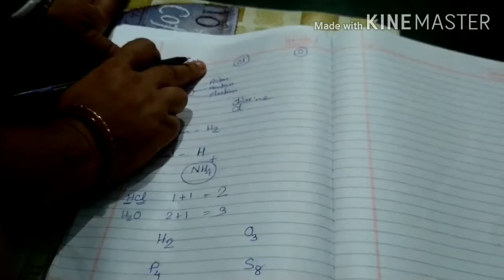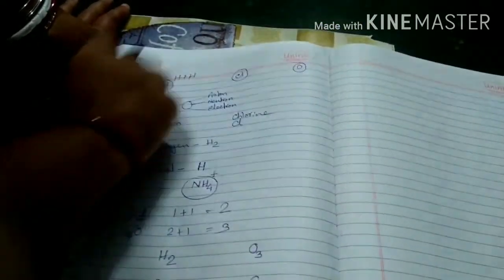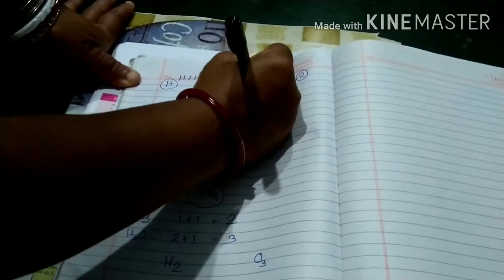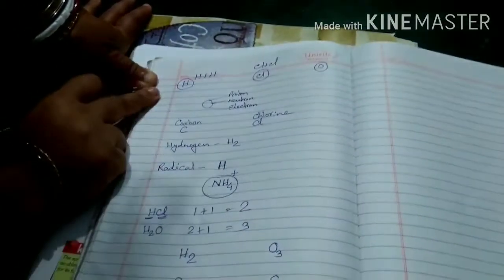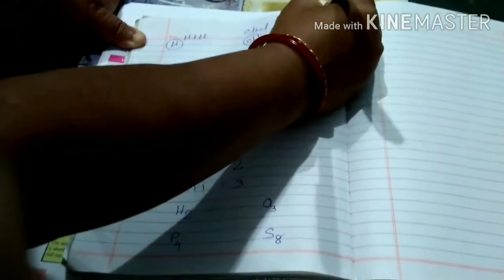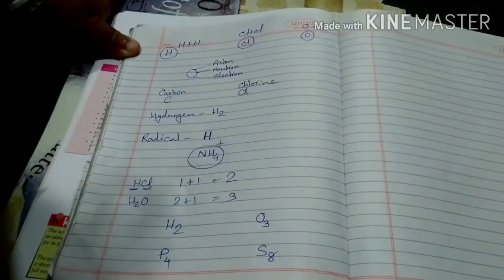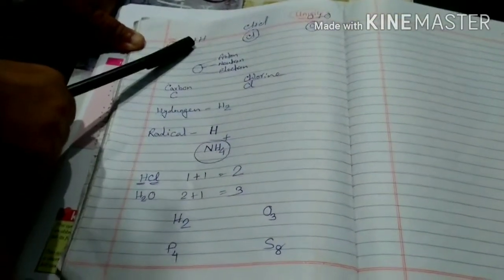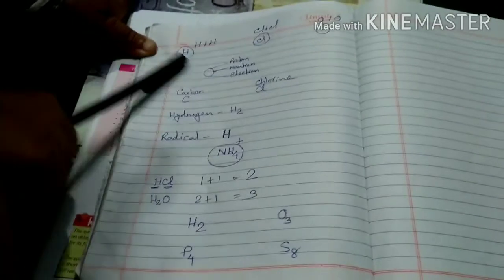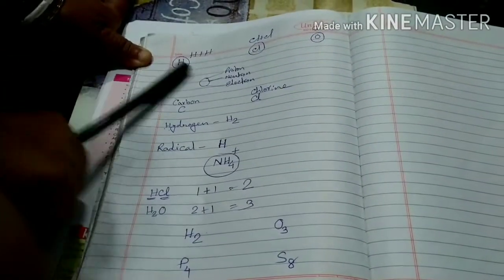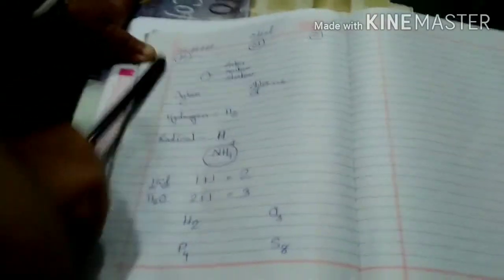Atoms are identical, but if you talk about hydrogen and chlorine, then the atoms are varying. That means atoms of chlorine are different from atoms of hydrogen, or atoms of oxygen are different from that of hydrogen or chlorine. Atoms of the same elements have the same properties. All atoms of one element are alike, but atoms of different elements are different.